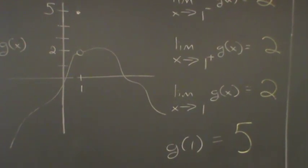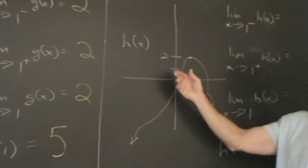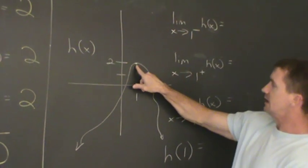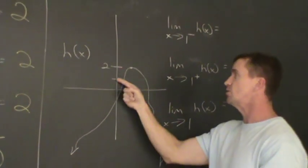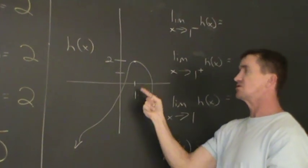Okay, and lastly, we have one last function. This is h of x. It sort of looks the same, but look. Here, this function's what's called a continuous function. It is continuous through x equal to one.